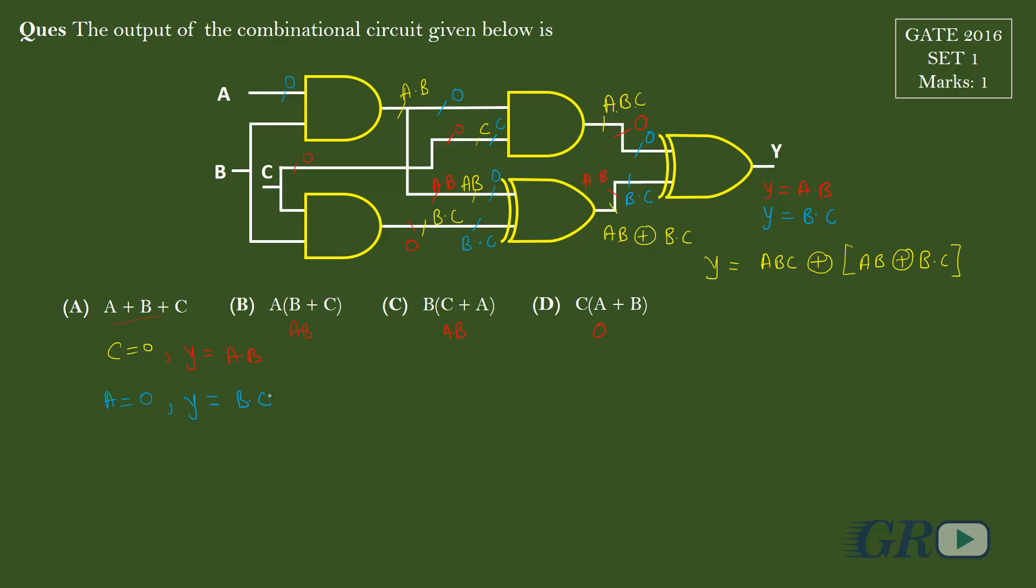Now if we check the two options, if I put A equals to zero I will get here zero and here B dot C. So option C is correct.